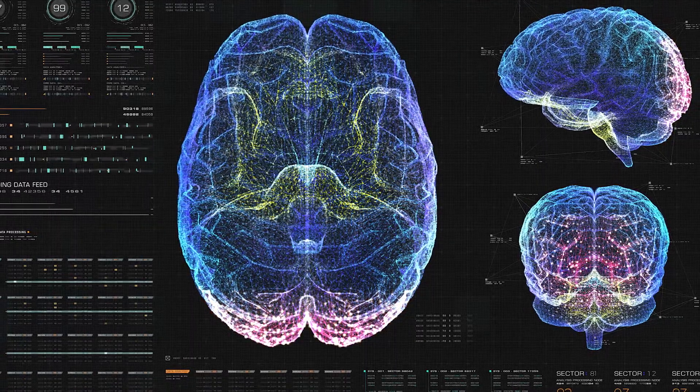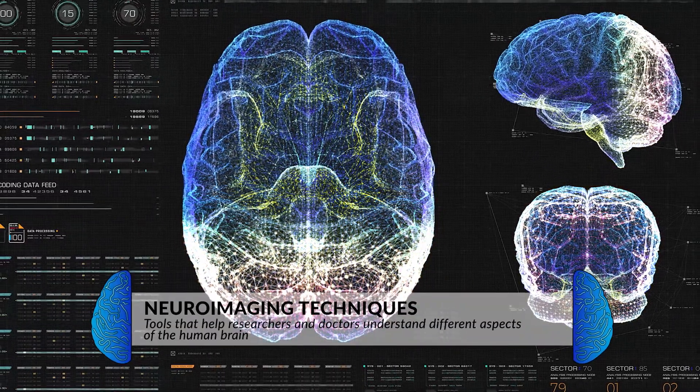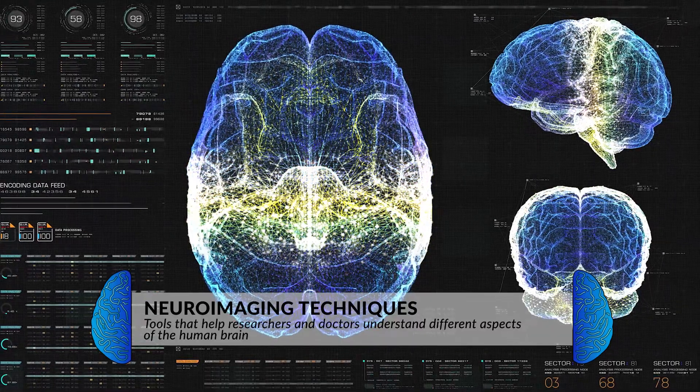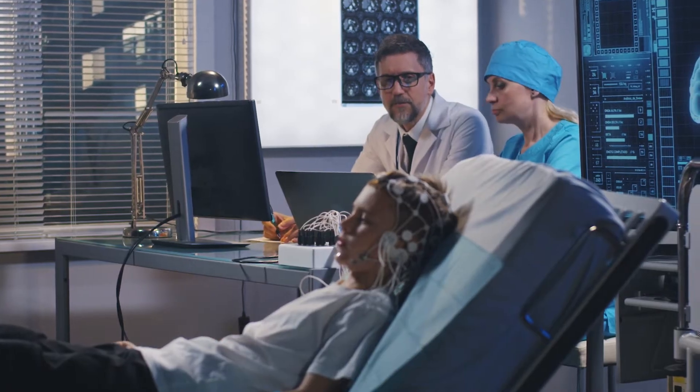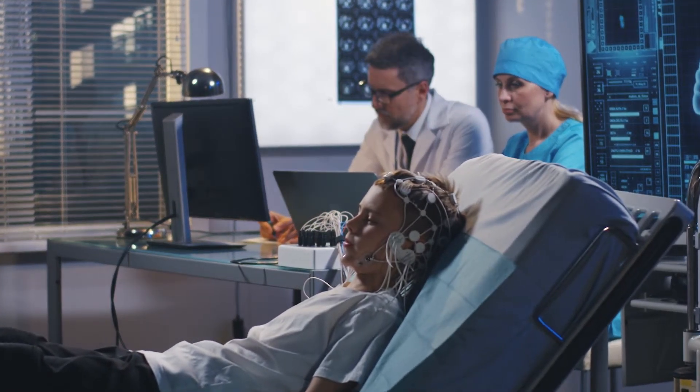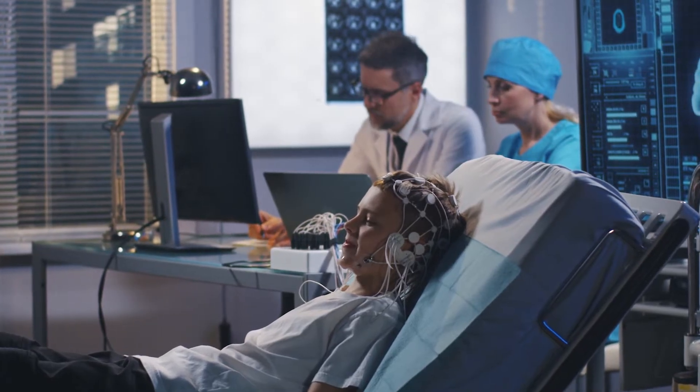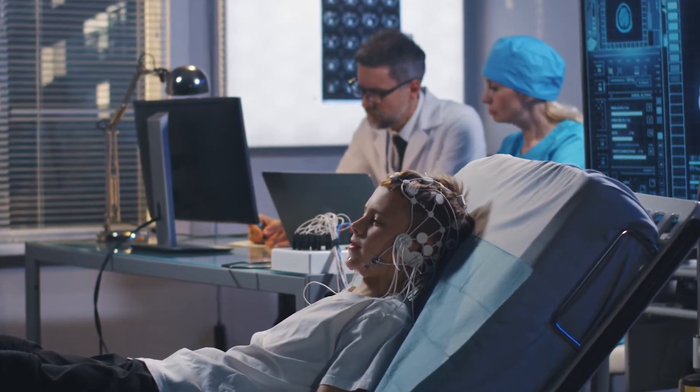Researchers and doctors observe the brain using different neuroimaging techniques. The first tool is an EEG, which stands for electroencephalogram. This is when electrodes are placed on an individual's scalp, allowing researchers to record electrical signals from neurons firing, which can be used for sleep and seizure research. Essentially, it measures an individual's brain waves and focuses on how the brain is functioning. One advantage is that it's non-invasive and can help identify abnormal electrical patterns that may indicate a disorder. However, it can be difficult to determine exactly which part of the brain is causing the activity.